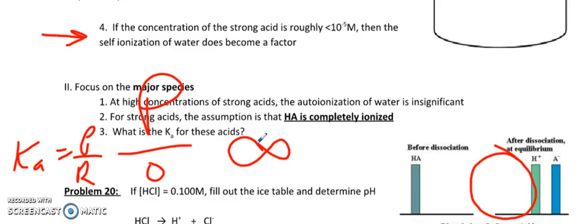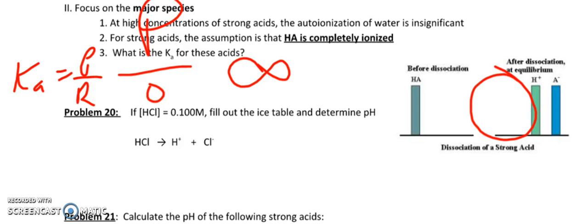So problem number 20 says if you have a concentration of HCl as 0.100, fill out the ice table, which is kind of maybe not the correct thing to say, but do it for me anyway and determine the pH. So pause this and please do that. So the first thing I ask you to do is to fill out the ice table. So I kind of did that right here.